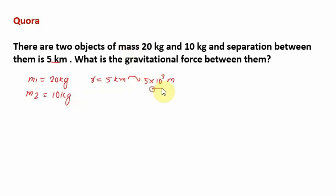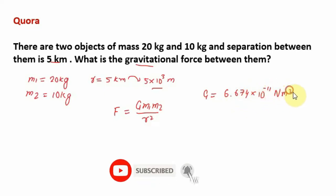Note down this, and you have to now calculate the gravitational force between them. The formula for gravitational force is F = Gm₁m₂/r², where G is the gravitational constant. We have the value: G = 6.674 × 10⁻¹¹ Nm²/kg².